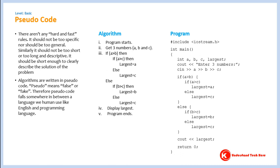There aren't any hard and fast rules regarding how to write algorithms. However, some conventions: algorithms shouldn't be too specific or on the other hand too general. Similarly, it shouldn't be too short nor too long and descriptive. It should be short enough to clearly describe the solution of the problem.